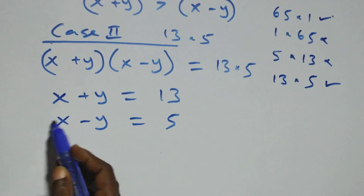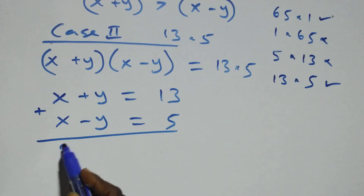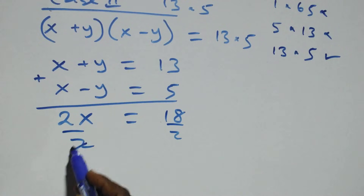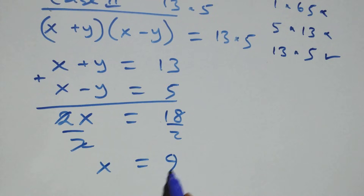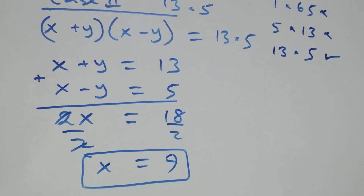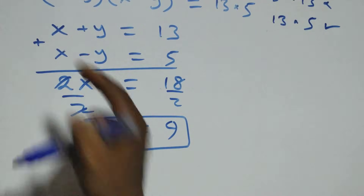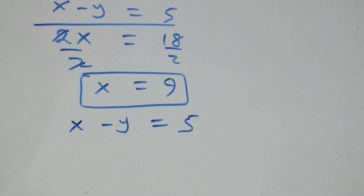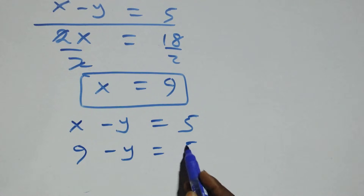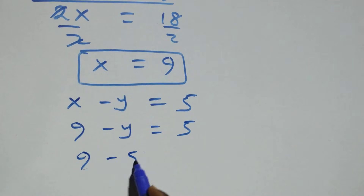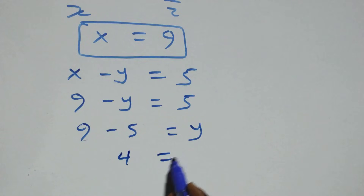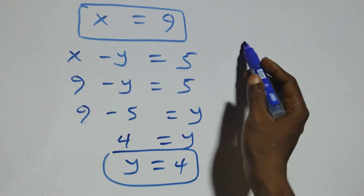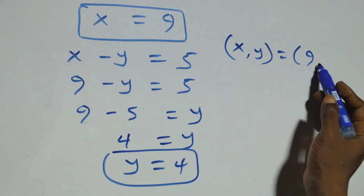We solve this simultaneously by eliminating y. x plus x gives 2x, which equals 13 plus 5, that's 18. Dividing both sides by 2, x equals 18 over 2, that's 9. So x equals 9. We get the corresponding value of y using the second equation: x minus y equals to 5. Substituting: 9 minus y equals to 5, so y equals to 9 minus 5, which is 4. Therefore y equals to 4, and (x, y) equals to (9, 4).